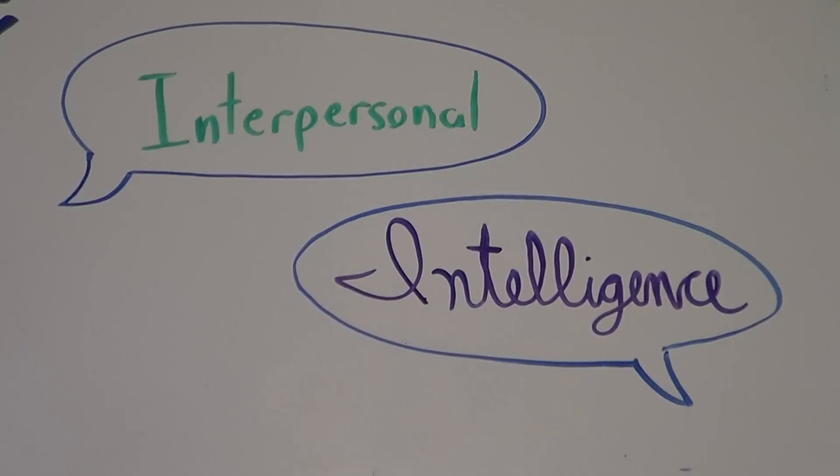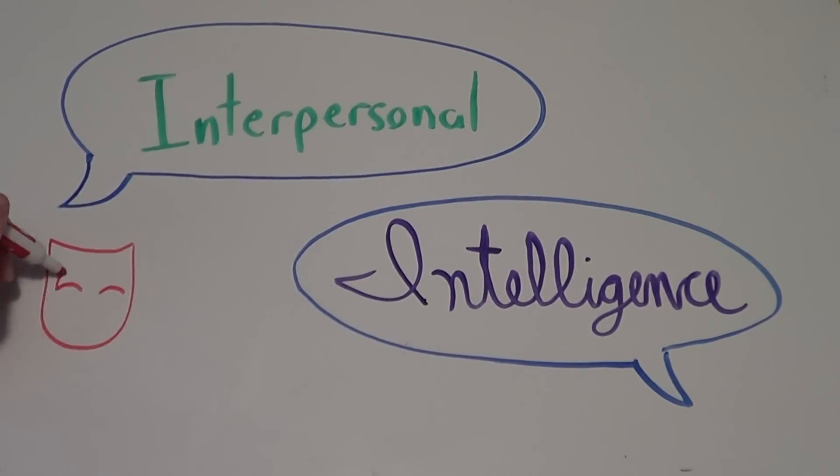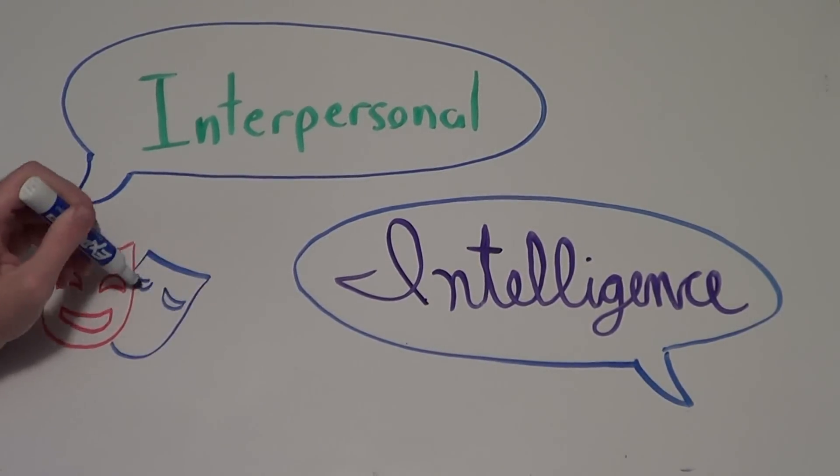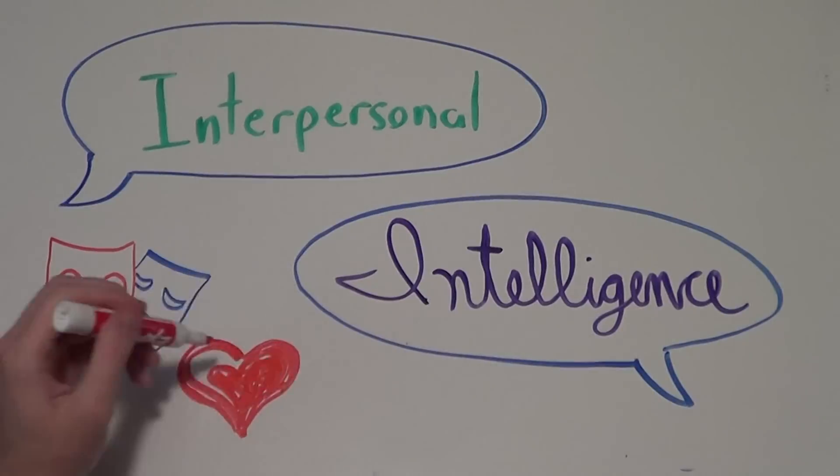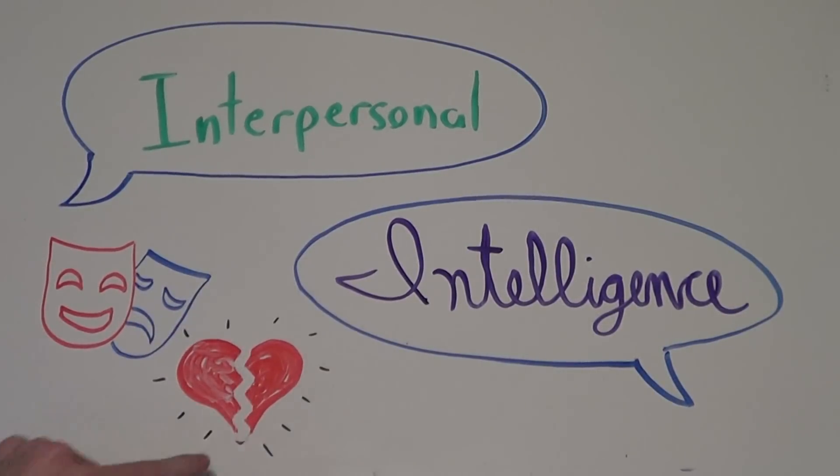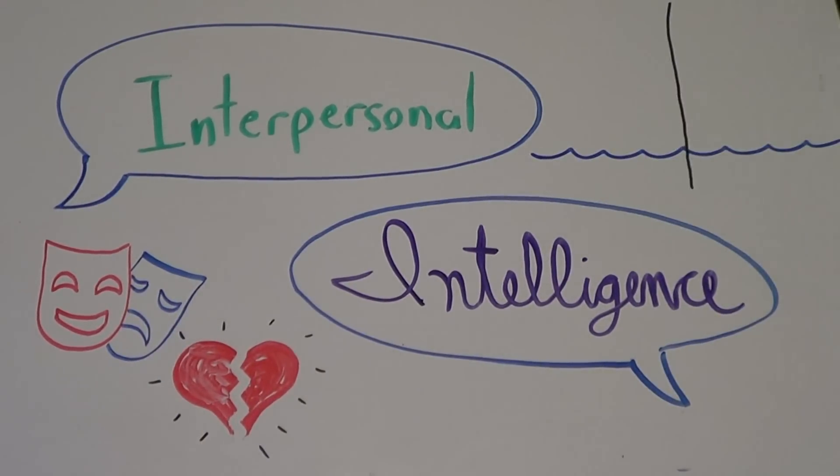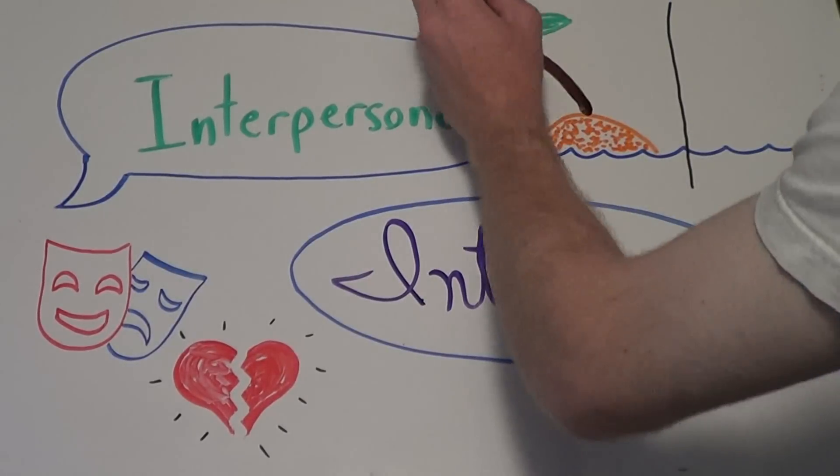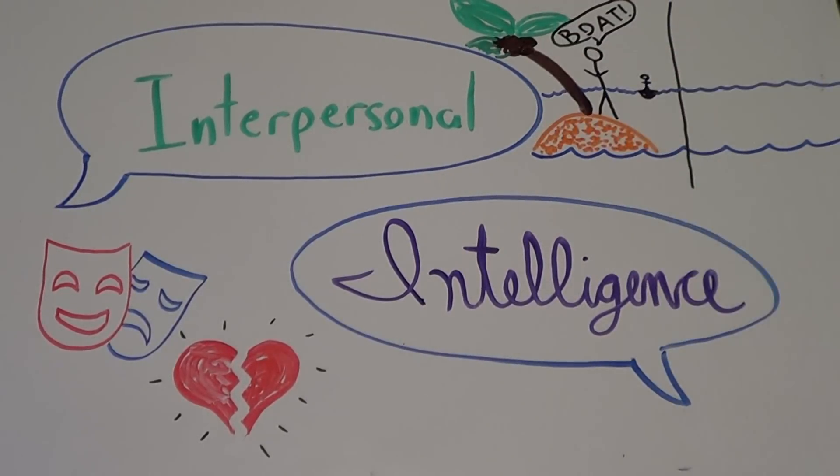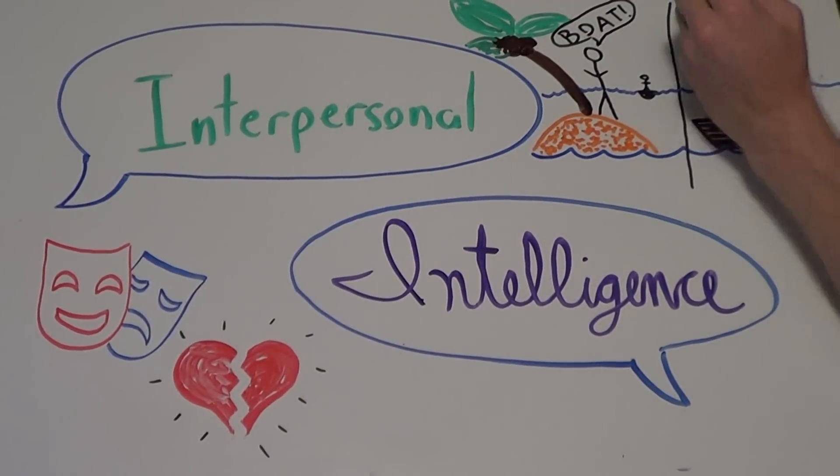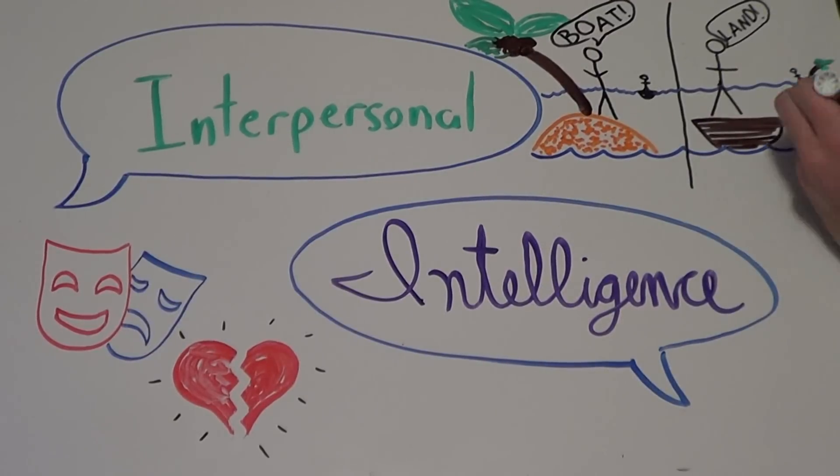Interpersonal intelligence is the ability to understand and interact effectively with others, to note distinctions among people, to recognize the moods and temperaments of others, and to entertain multiple perspectives. Because they are naturally skilled at communicating, those who are people-smart, like Gandhi and Oprah Winfrey, are often leaders among their peers.